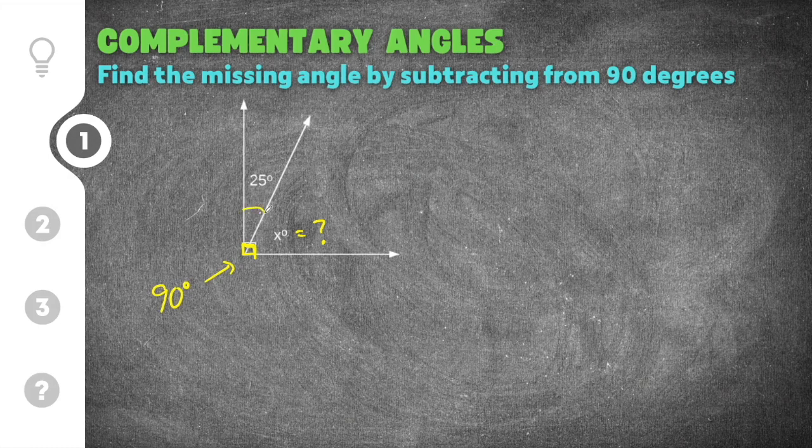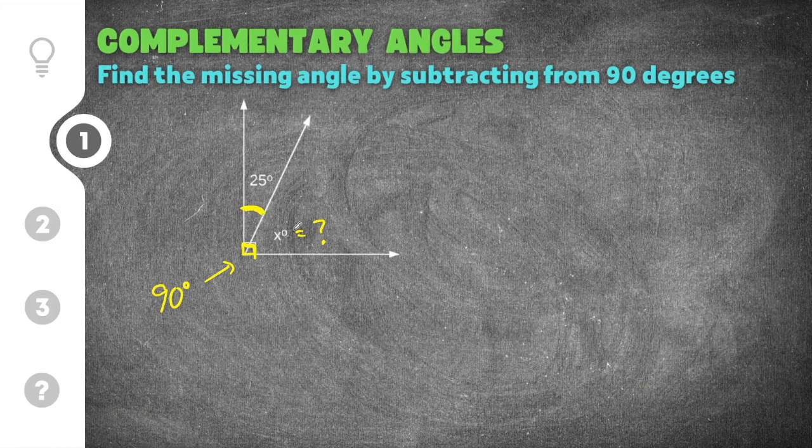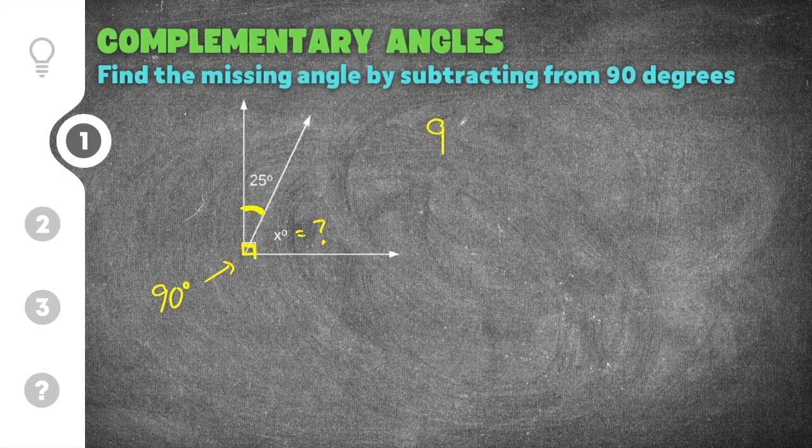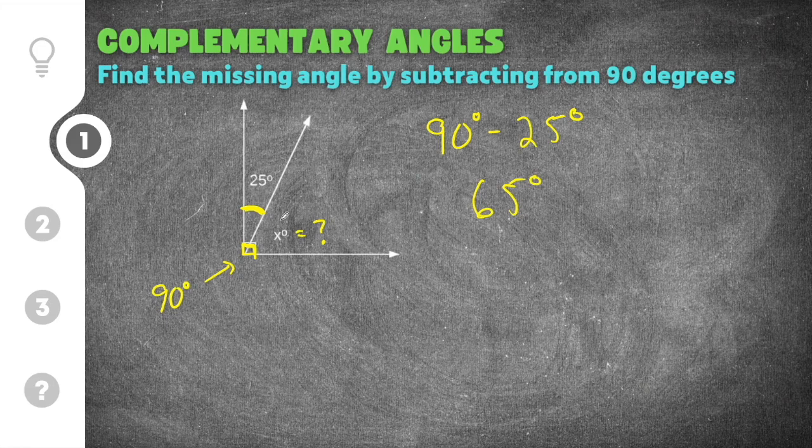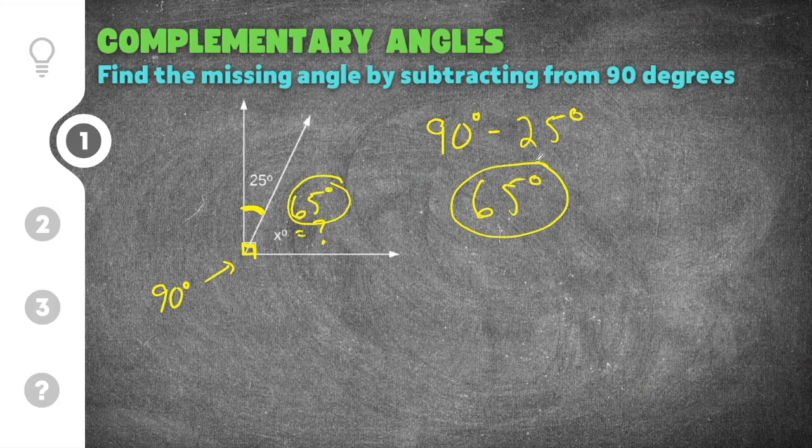So if we know this part is 25 degrees, we can find out this missing part by subtracting this from 90. So we're going to say 90 degrees minus the angle we know, which is 25 degrees. 90 degrees minus 25 degrees is 65 degrees. So we know this angle here is going to be equal to 65 degrees, and this is going to be our answer.